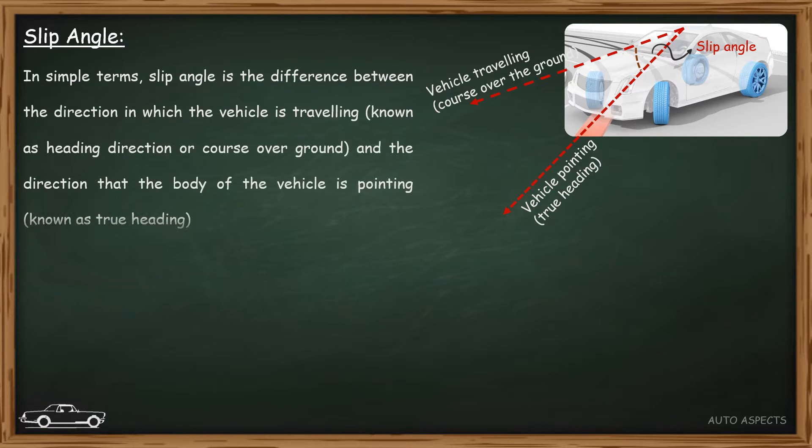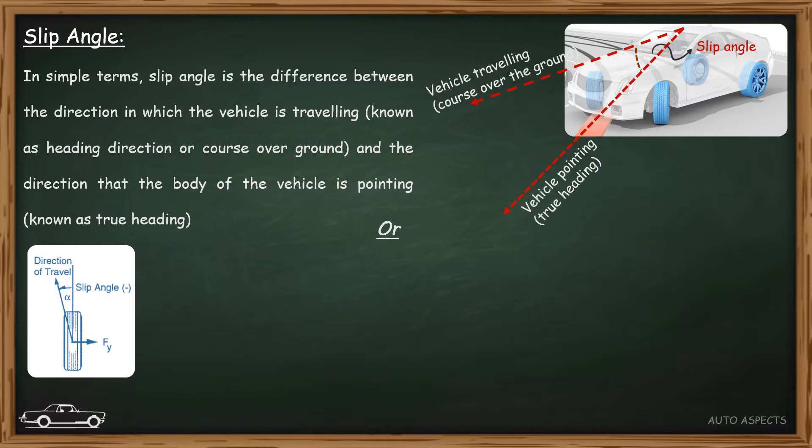In other words, the angle between a rolling wheel's actual direction of travel and the direction towards which it is pointing is defined as slip angle.